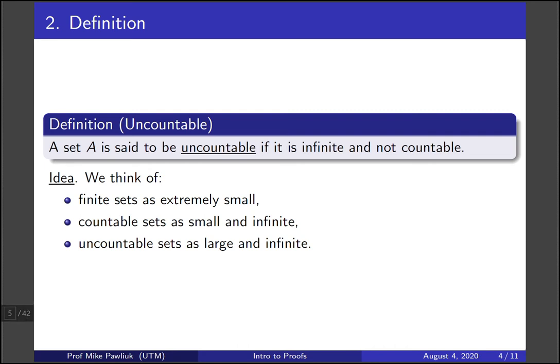So as an idea, we're going to think of finite sets as being extremely small. Finite sets are just much smaller than infinite sets. So you should think about finite sets as being extremely small. Countable sets are both small and infinite. So even though they're infinite, we're going to think of them as being small sets. Countable means small. And uncountable sets, we're going to think of them as infinite and large. So we're going to think about uncountable sets as being much, much bigger than countable sets. Now this intuition can be formalized, and we're going to formalize it in the next slide.